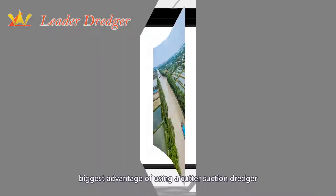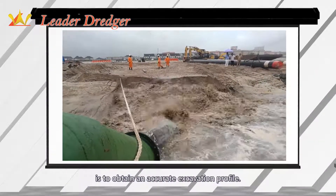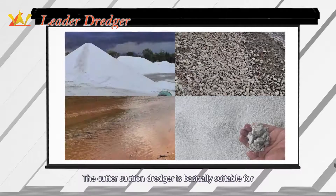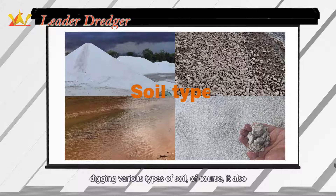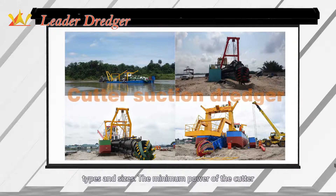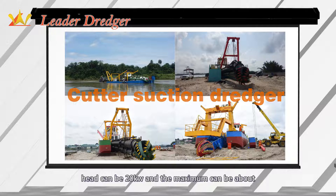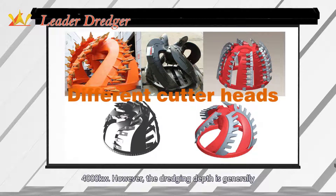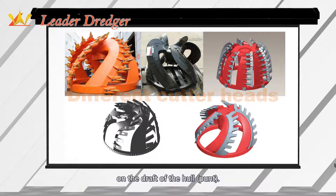The biggest advantage of using a cutter suction dredger is to obtain an accurate excavation profile. The cutter suction dredger is basically suitable for digging various types of soil, depending on the configuration of the cutting power. It has a wide range of types and sizes — the minimum power of the cutter head can be 20 kilowatts and the maximum can be about 4,000 kilowatts. However, the dredging depth is generally limited, and the minimum depth generally depends on the draft of the hull.